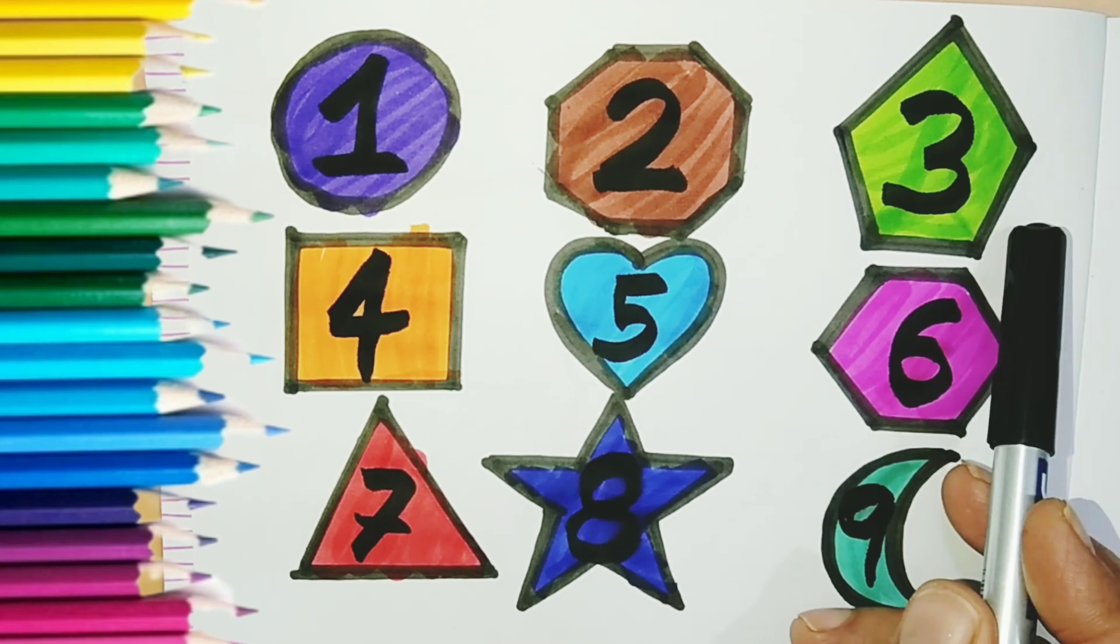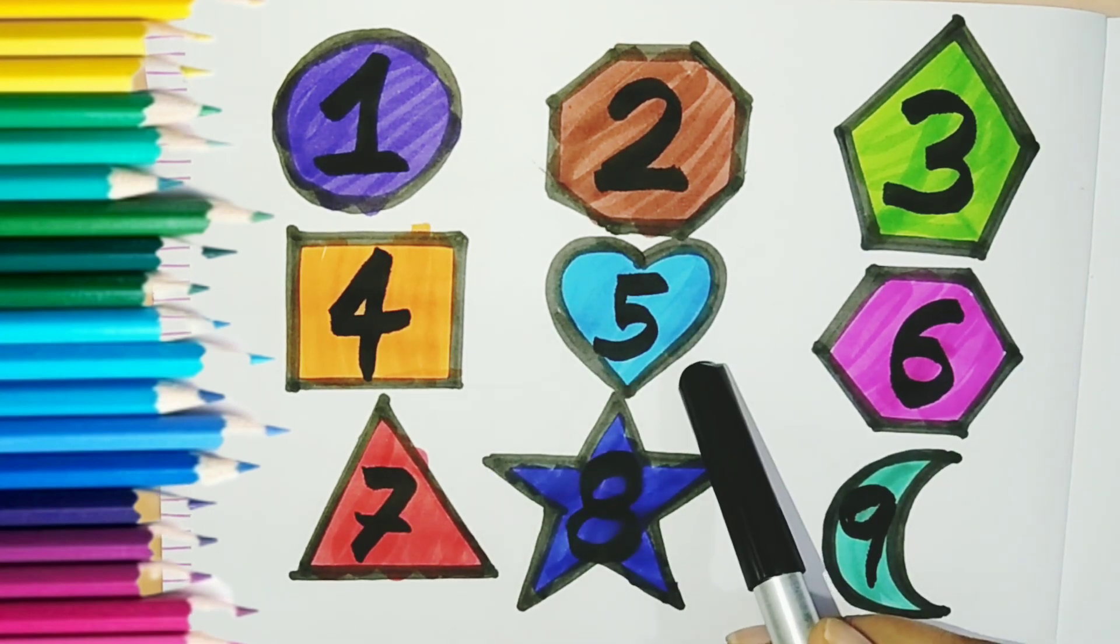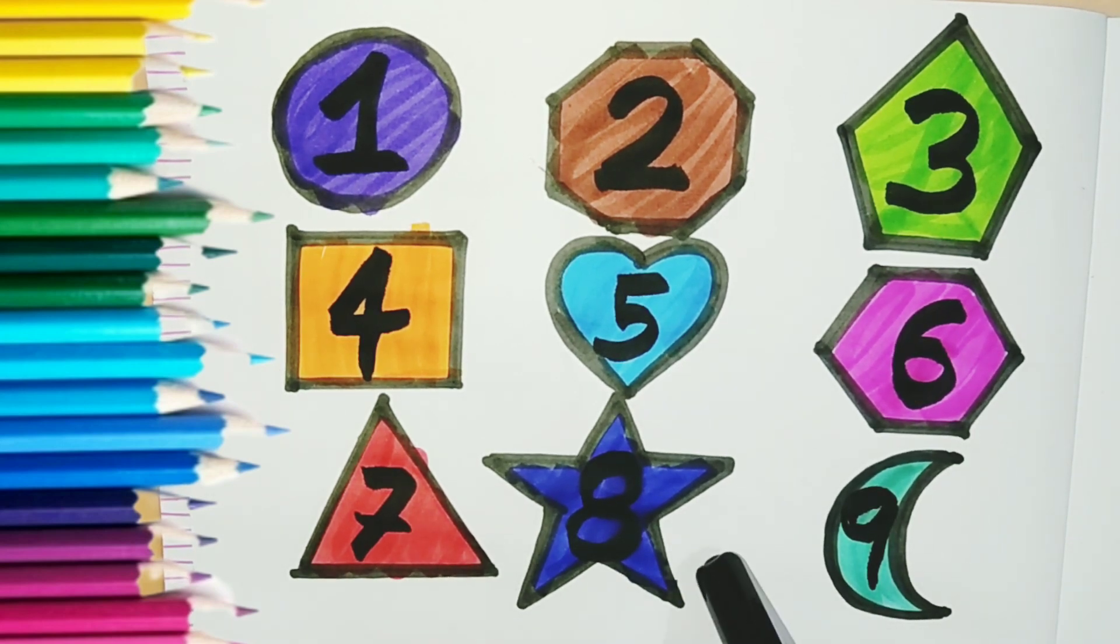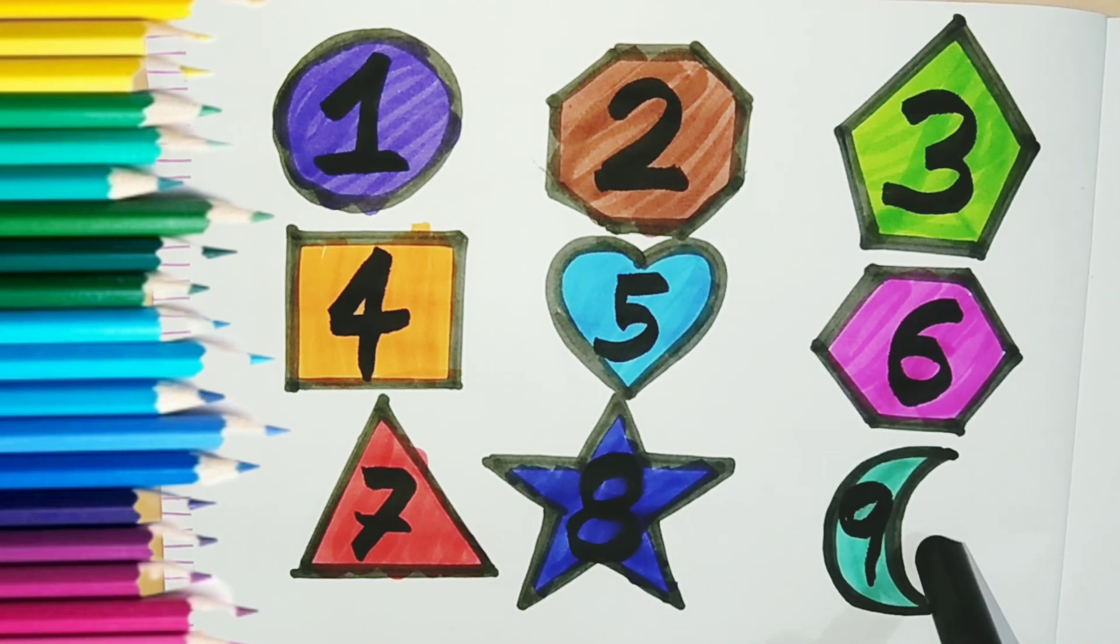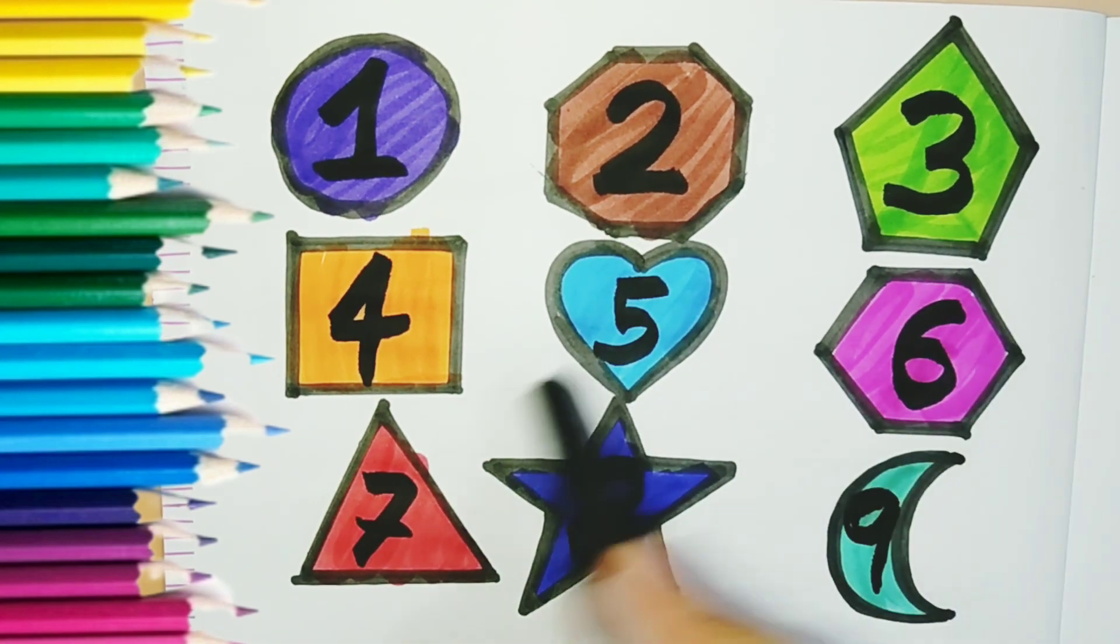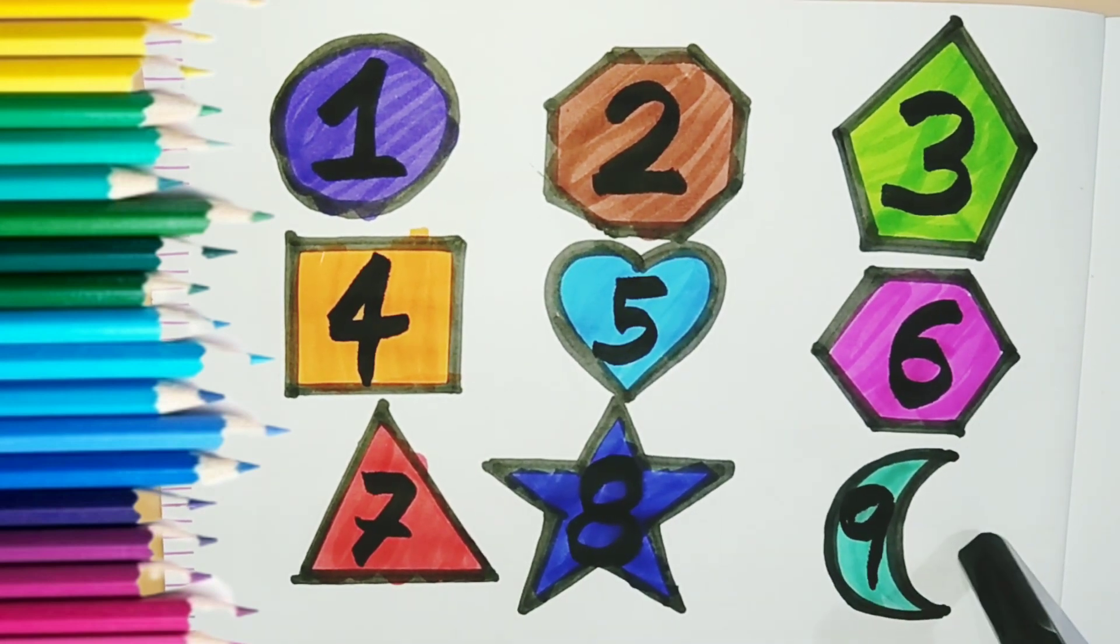Green, orange color, sky blue color, pink. Red, blue color, sea green color. One, two, three, four, five, six, seven, eight, nine.